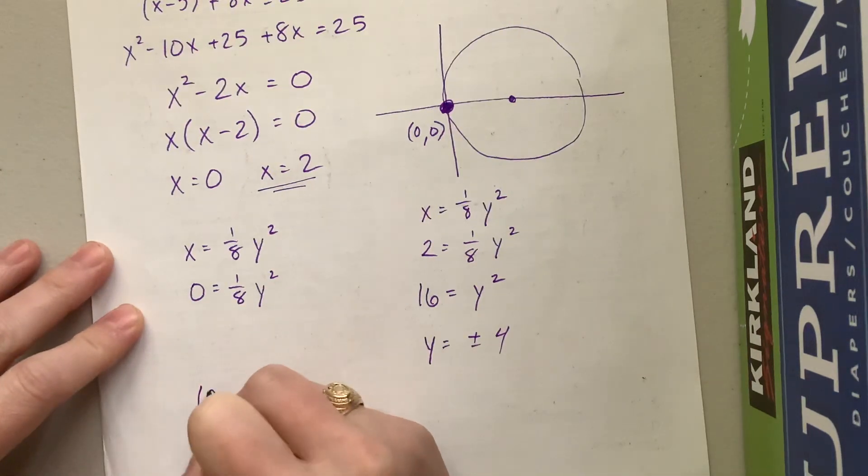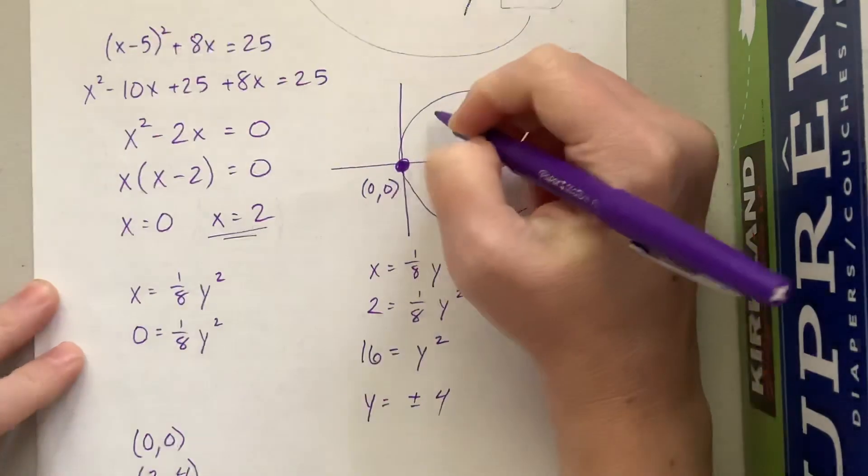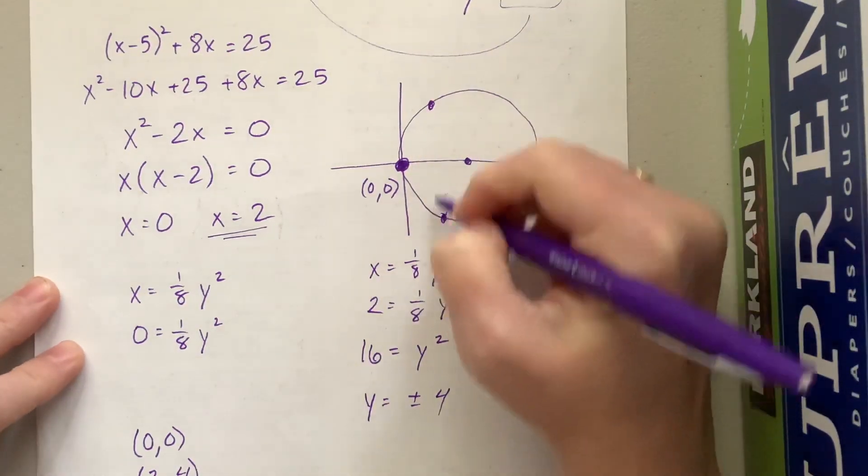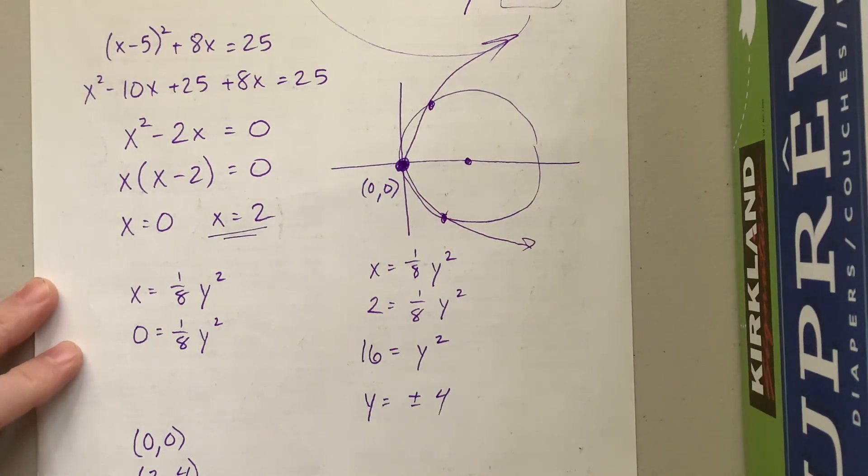And so y is actually equal to plus or minus 4. So our points of intersection are going to be (0, 0), which we have here. We're going to have the point (2, 4), and we're going to have the point (2, -4). So that's here and here. And this parabola, oh, pretend I can draw. That parabola is doing something like that.